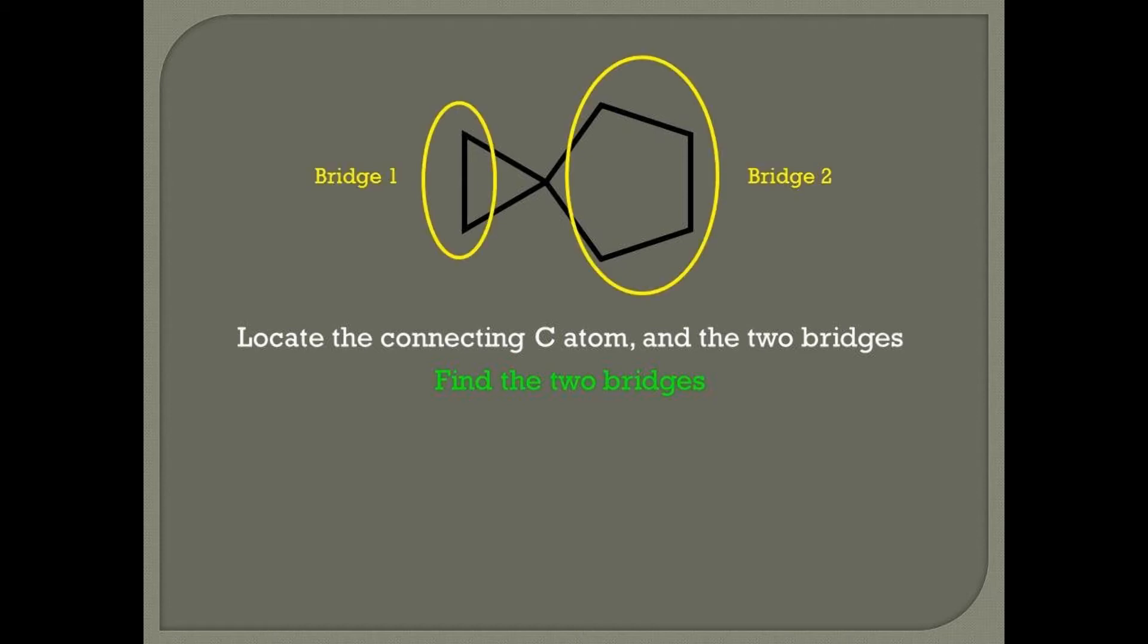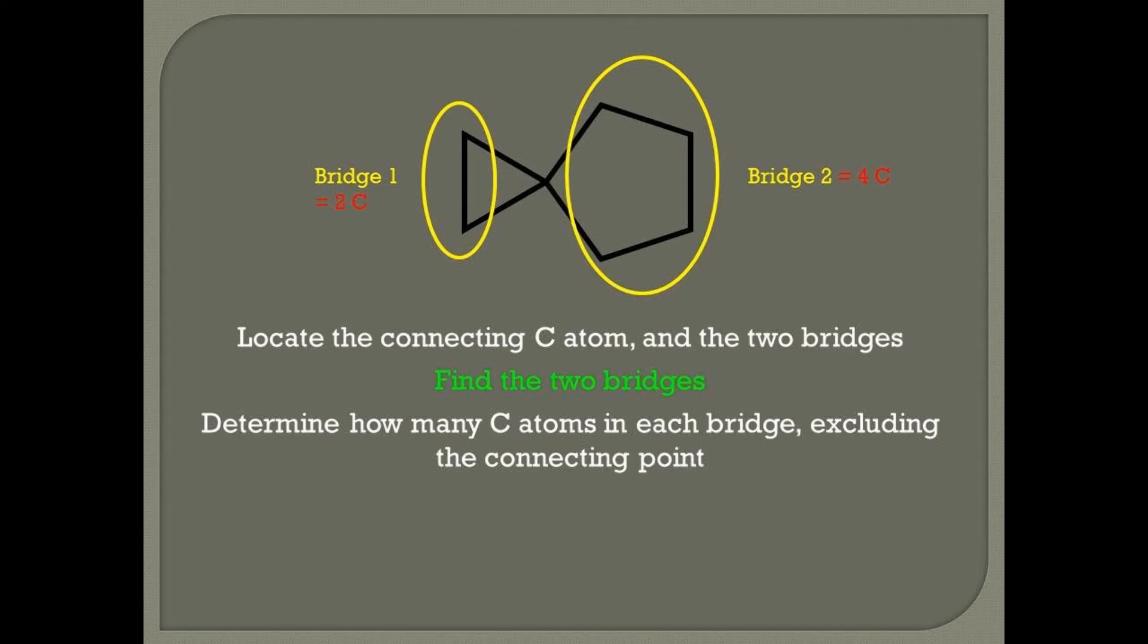Find the two bridges, bridge one, bridge two. Now, determine how many carbon atoms in each bridge, excluding the connecting point. We can see that bridge one has two carbon atoms, whereas bridge two has four carbon atoms.